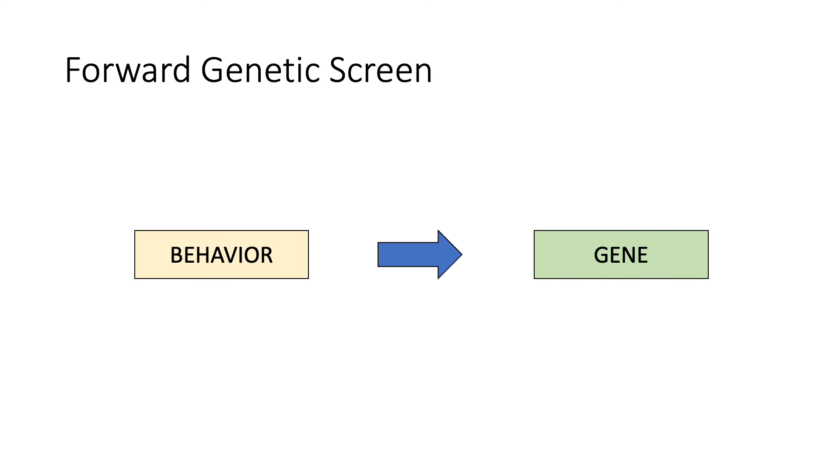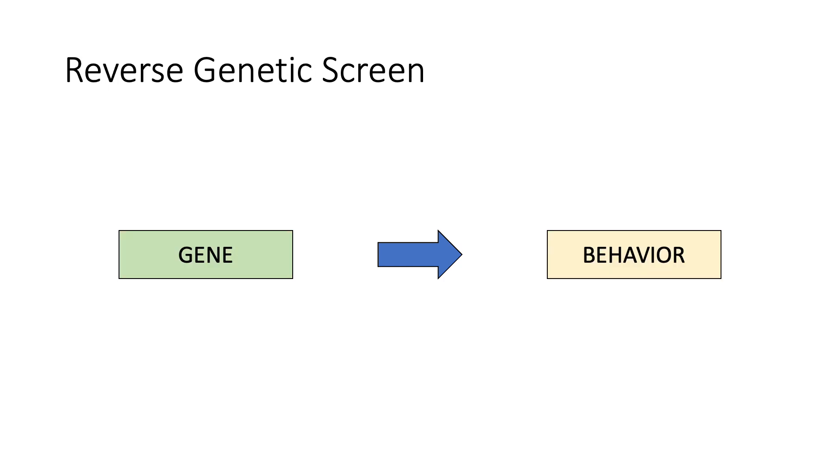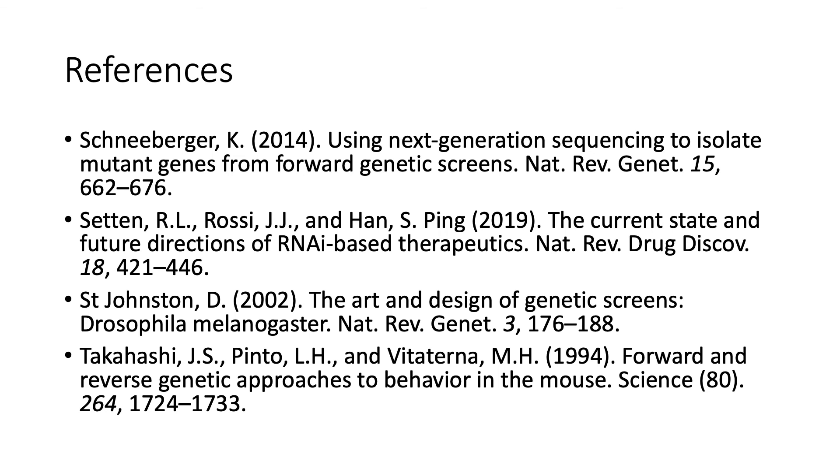Summarizing, we have seen two different approaches to perform genetic screens. First, the forward genetic screen in which we go from an observed behavior or biological function of interest and then we identify the gene or genes that regulate such behavior or biological function. We also discussed the reverse genetic screen in which we start from a gene of interest and by disrupting it, we determine its role in the regulation of a behavior or biological function.